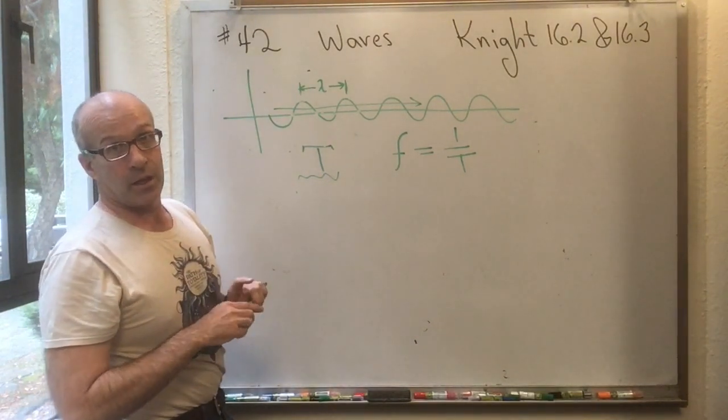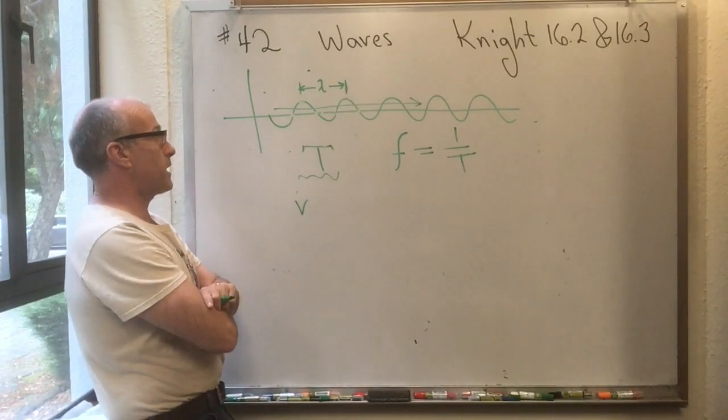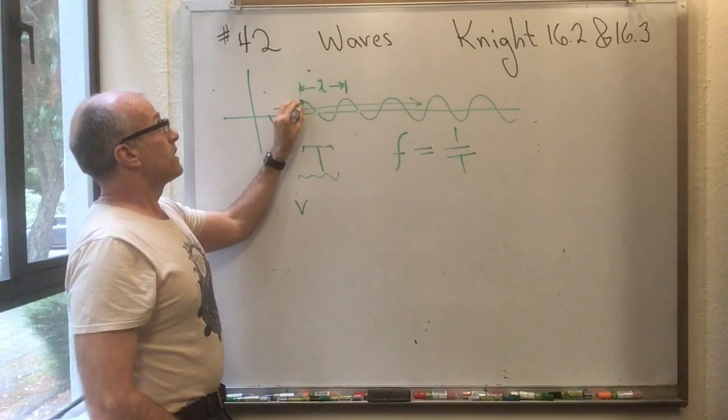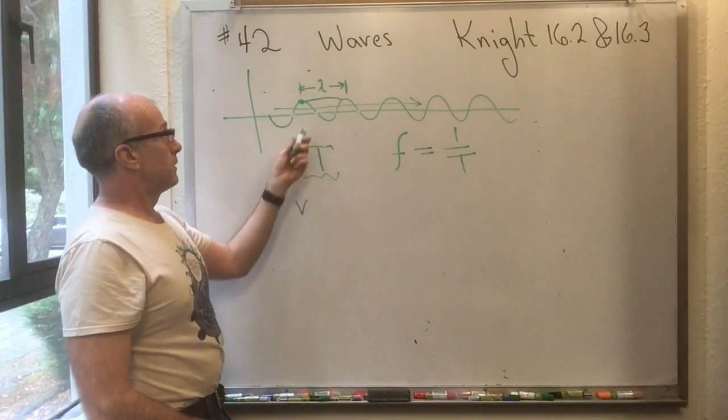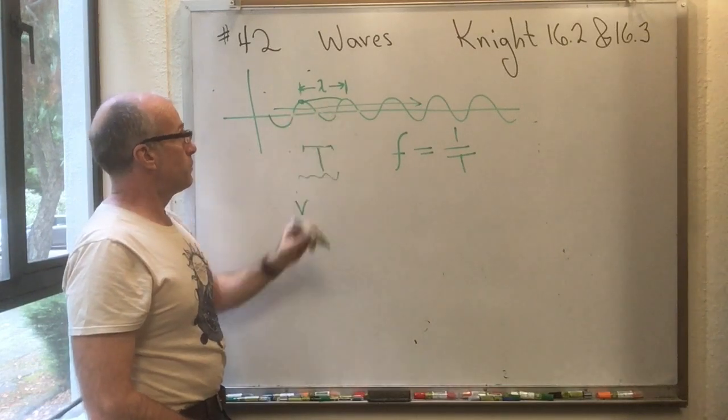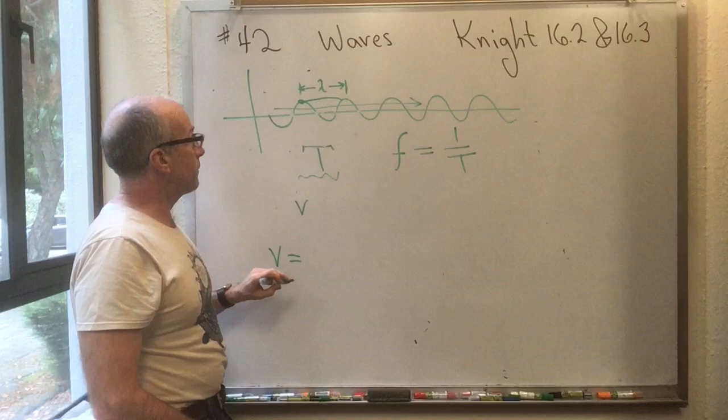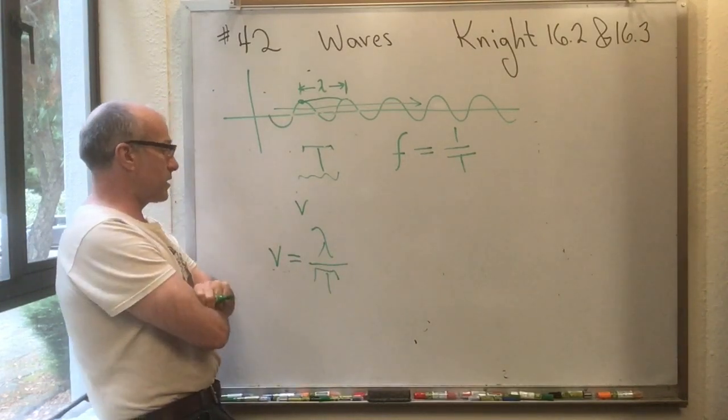Now interestingly, there's a relationship between those two things in the speed of the wave, V. If this crest takes a time T to get here, then we know how fast it's moving. V, the speed of the wave, is how far it got over how long it took to get there.